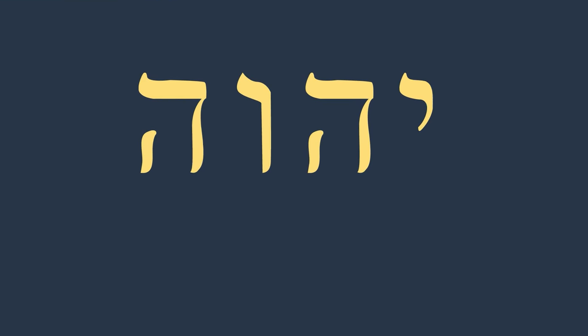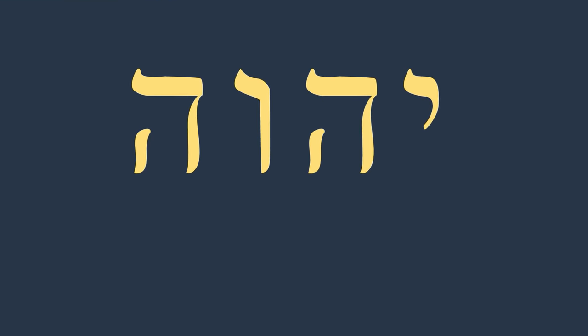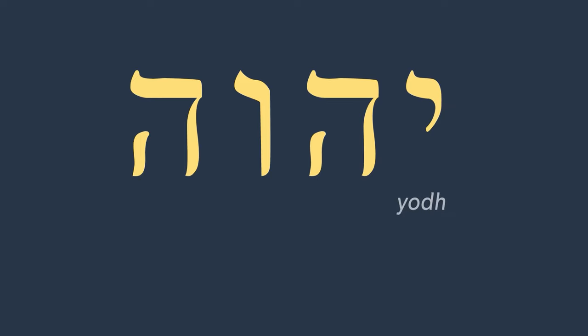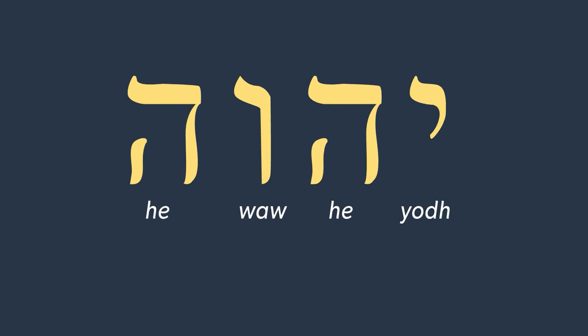The Tetragrammaton consists of four Hebrew letters: Yod, He, Wa, and then He repeated.